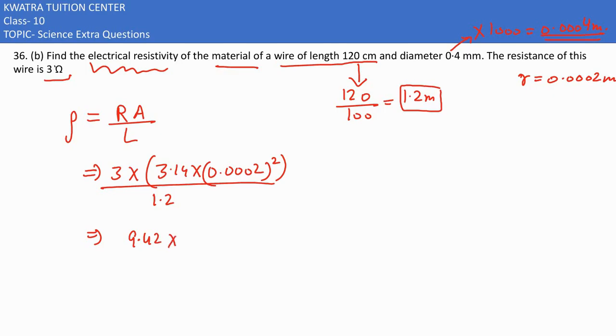9.42 is there. Next, you have 0.0002 and you need to square it. This would give you 4, and you have to put the decimal before 8 numbers. So it would be 0.00000004. Divide it with 1.2.